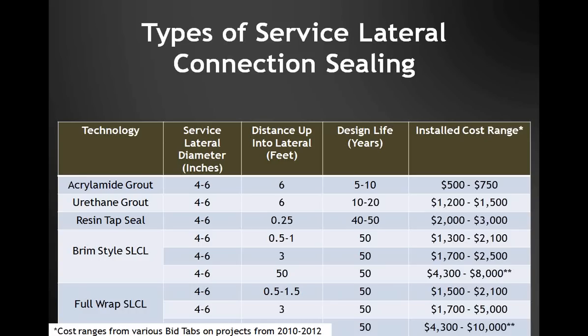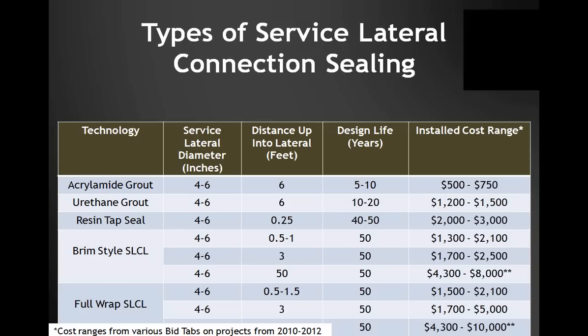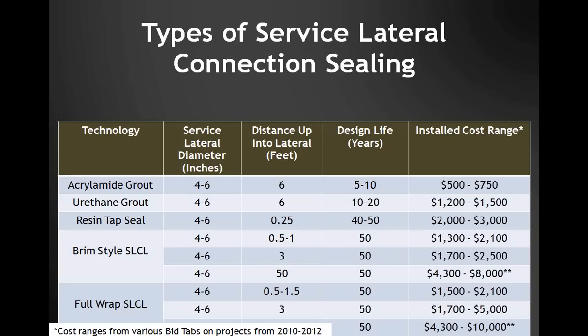This table shows the different types of service lateral connection sealing available, how far up into the lateral each technology can seal, design life of each product, and a range of installed costs. Service lateral connection liners can extend up 50 feet or even further — up to the house, the property line, or the clean-out, depending on how much the municipality owns. The further up you go, the more expensive the liner becomes, but it's not a linear relationship due to installation methods and material costs.